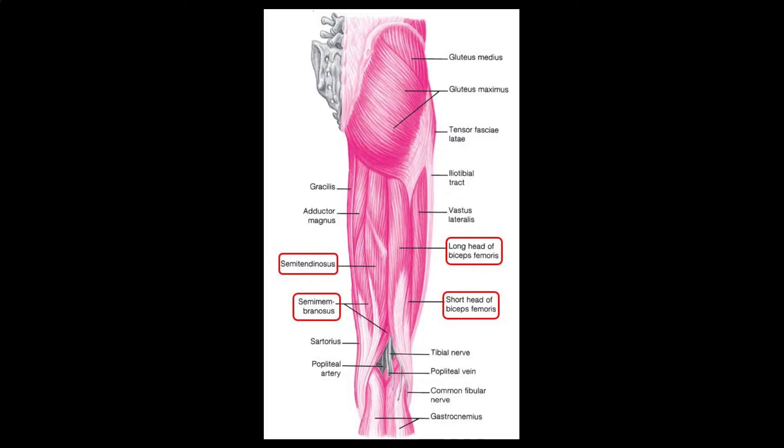The hamstring muscle group consists of the biceps femoris, semitendinosus, and semimembranosus. These three muscles are located in the posterior compartment on the back of the thigh where they cross over both the hip and the knee. They originate or begin at just below the buttocks arising from the ischium, which is the bone to which they are attached. The hamstrings also connect distally by means of their tendons onto the upper parts of the lower leg bones, the tibia and the fibula.